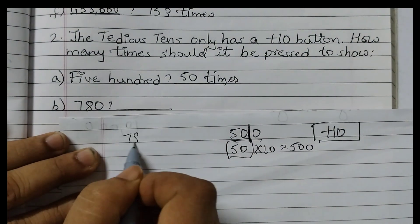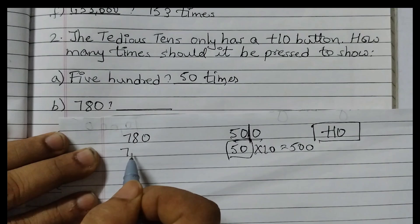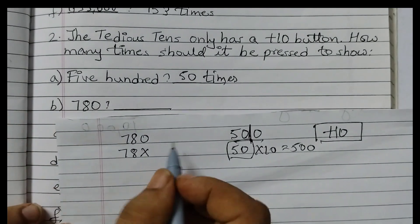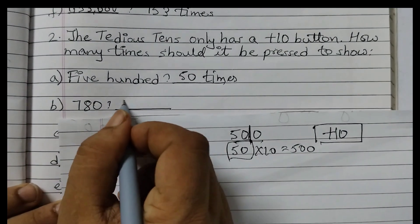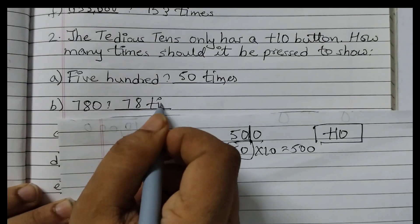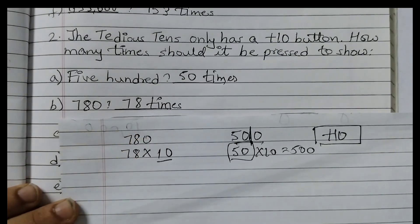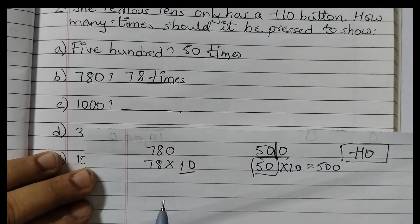780. So 780 we can write as 78 into 10, right? So we need to press this button 78 times. This is a very easy concept if you understand.